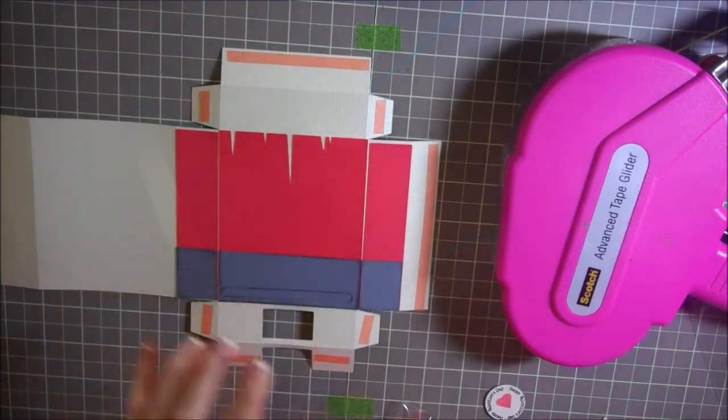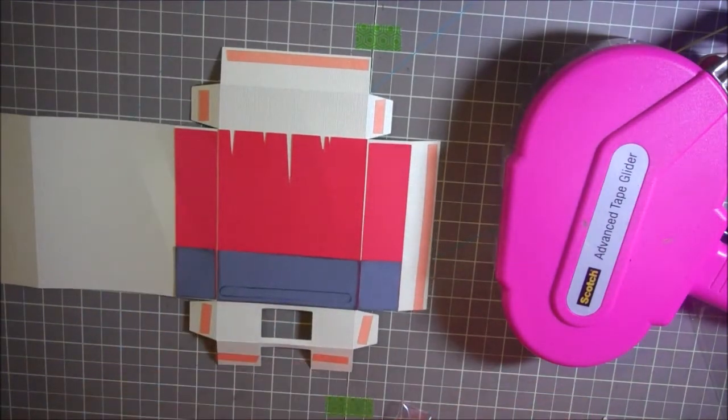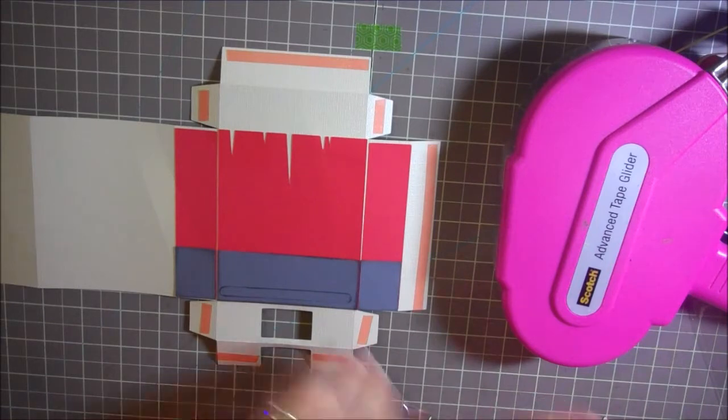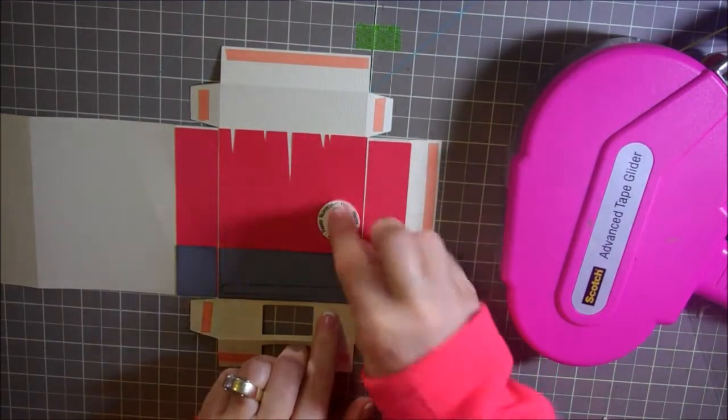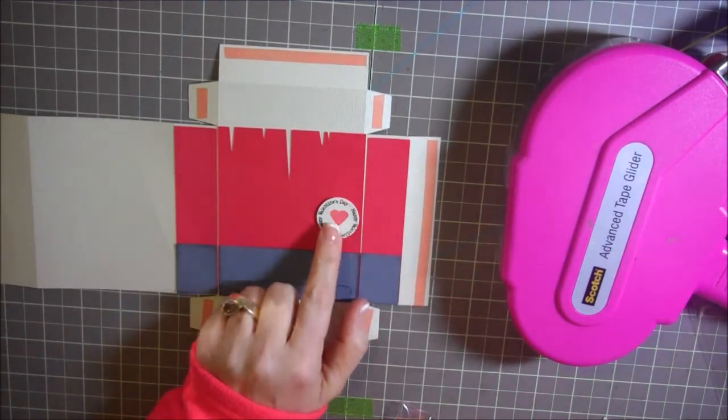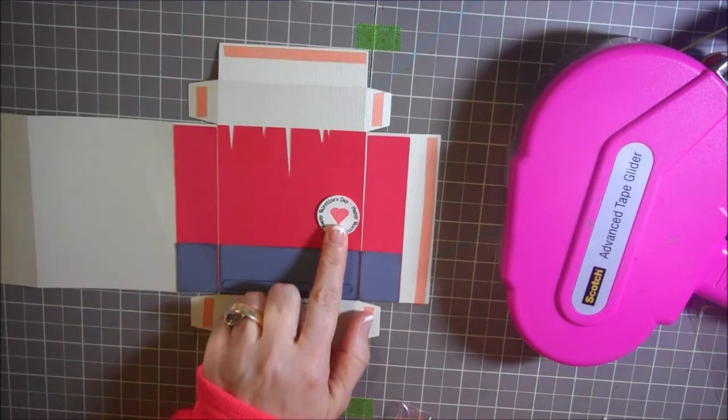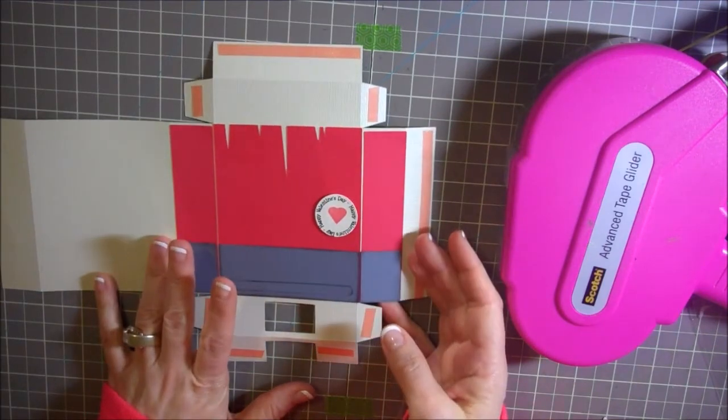And now what I'm going to do is go ahead and put my little Happy Valentine's Day like that. And it's got a little heart that actually is on the stamp set going in circles. So now I'm going to start assembling this.